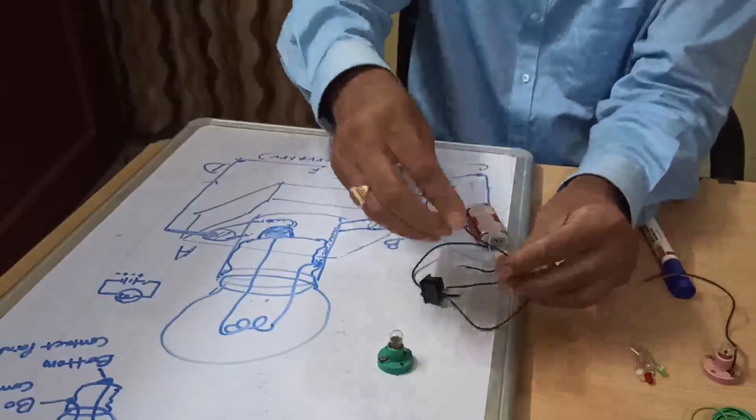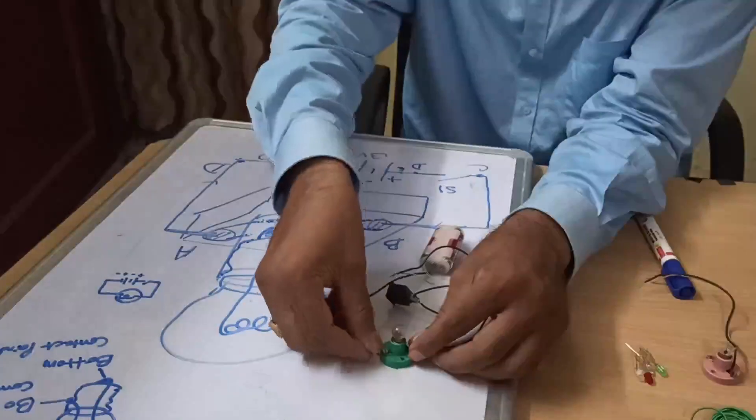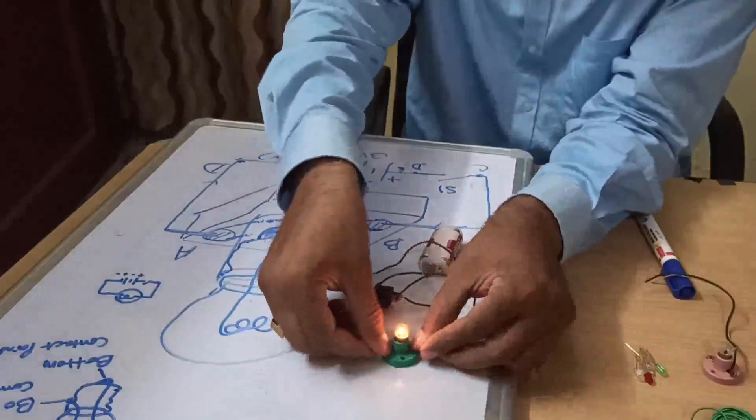Now C to B, if I touch here like this, now it is glowing.